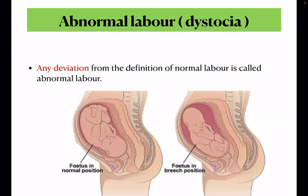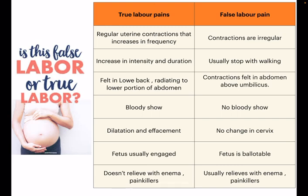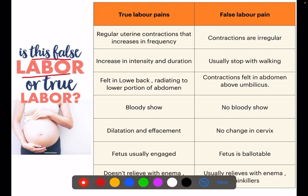Next, what is the difference between true labor pains and false labor pains? First: regular uterine contractions that increase in frequency — contractions which are regular in nature and increase in frequency — those are true labor pains, which are progressive in nature. If contractions are irregular, those are false labor pains, also called Braxton Hicks contractions.